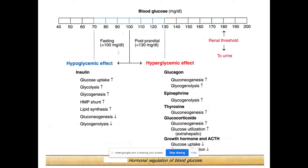Looking at the blood glucose concentration scale — ranging from 40 to 120 mg — the normal fasting blood glucose range is 70 to 100 mg per deciliter, and the PPBS normal range is about 120 to 140 mg per deciliter. The renal threshold for blood glucose is 180 mg per deciliter; if blood glucose concentration increases beyond 180 mg, it will start being excreted in the urine, a condition called glycosuria.